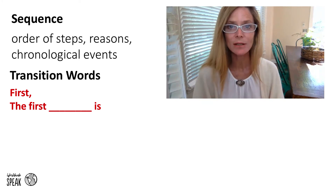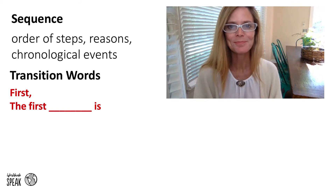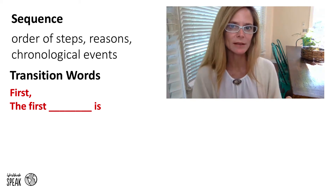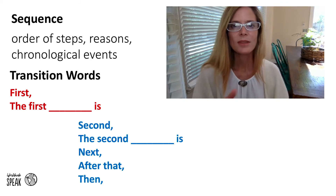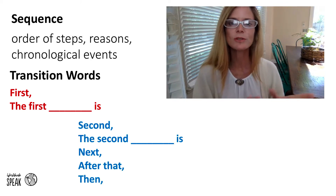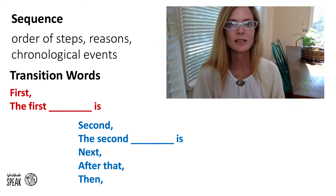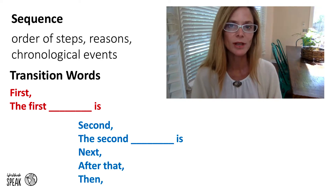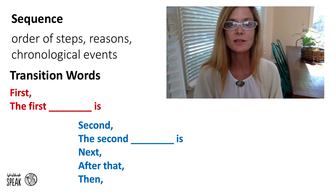When we begin, we can use these transitions: 'First,' with a comma, or 'The first step is,' 'The first example is,' 'The first reason is.' Next, we have words for the middle: 'Second,' with a comma, or 'The second step is,' 'the second example is,' 'the second reason is' — notice there's no comma after that phrase. We can also use 'Next,' with a comma, 'After that,' with a comma, and 'And then,' with a comma.